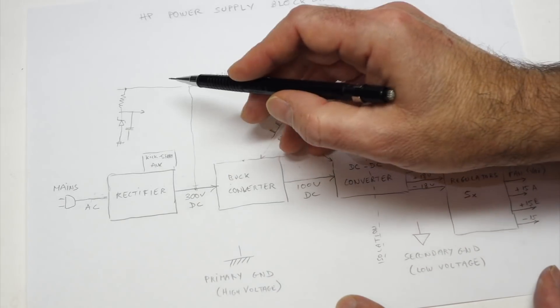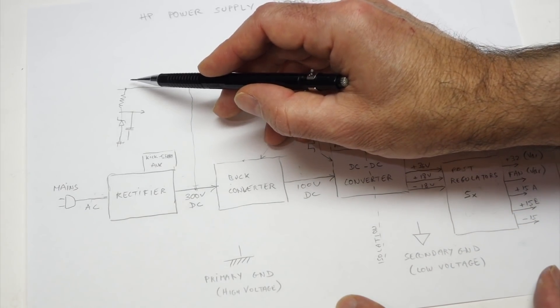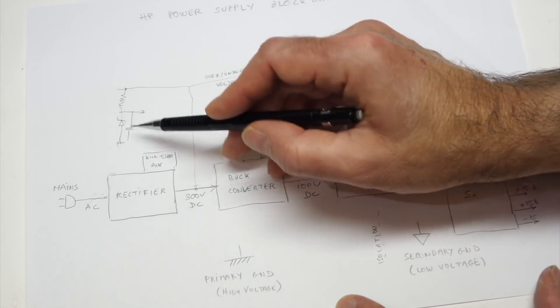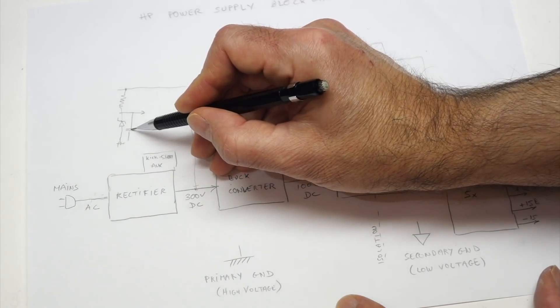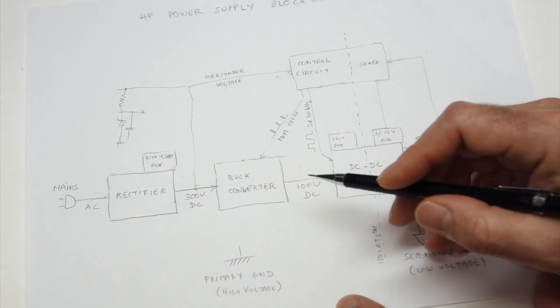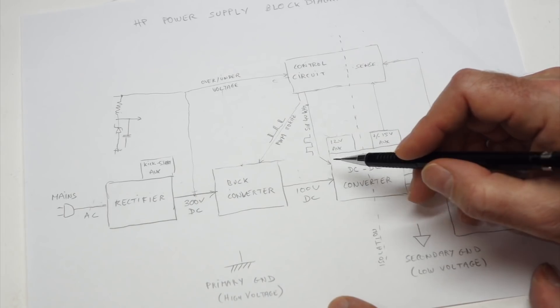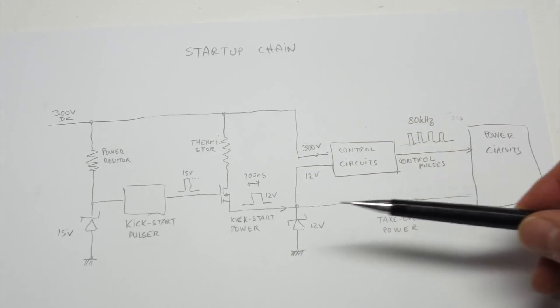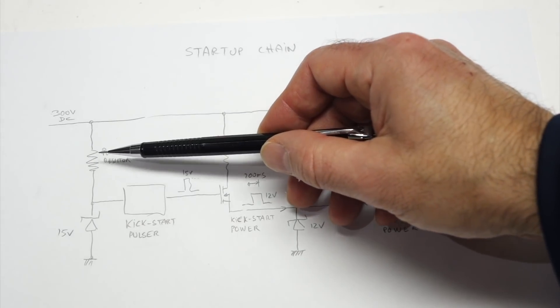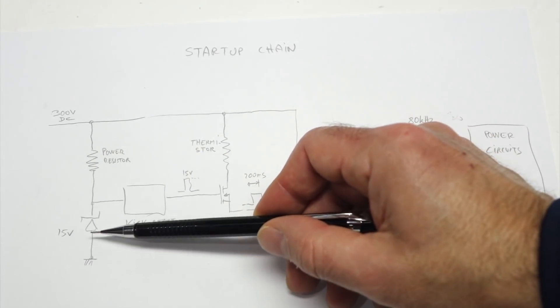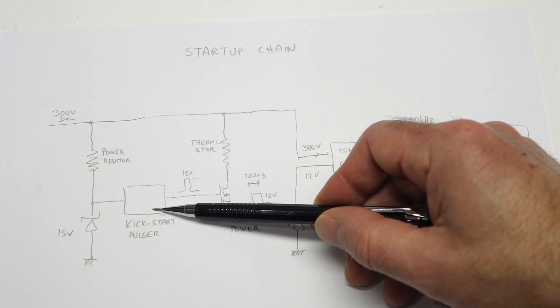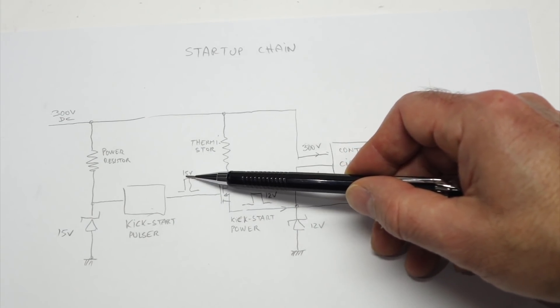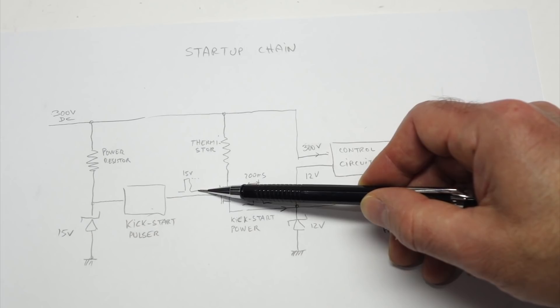So actually, a very common failure in a power supply that don't start is that the cap is zapped or the resistor has burned. But in this one, they made it even more complicated. And it's actually a three-stage process. So the first one is the simple power resistor through zener, which goes through the kickstart pulsar, and generates a 15 volt pulse every two seconds.